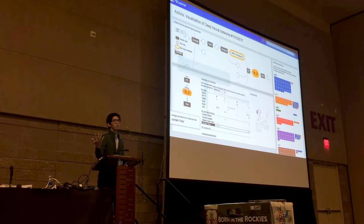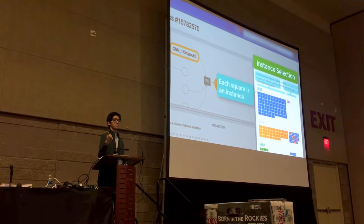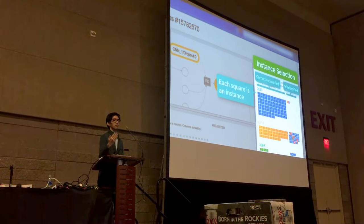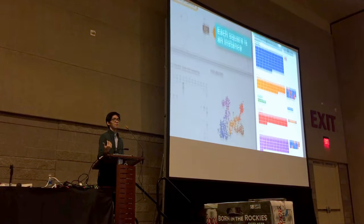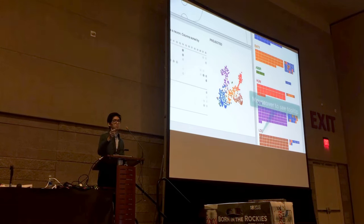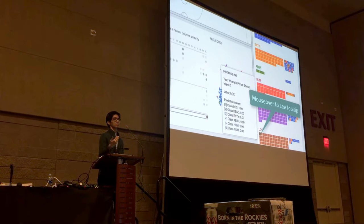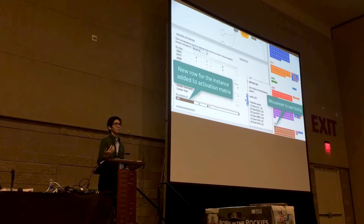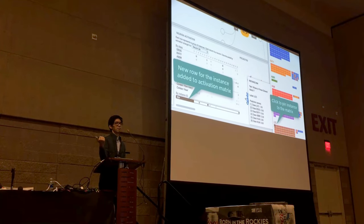On the right side of the panel is the instance selection panel for adding instances. Each square represents an instance positioned by true class label vertically and whether it is correctly predicted by the model horizontally. Users can mouse over an instance box to see detailed information including label and prediction scores for that instance. At the same time, a new row is added to the instance basis view on the left, showing which neurons are highly activated for that instance.